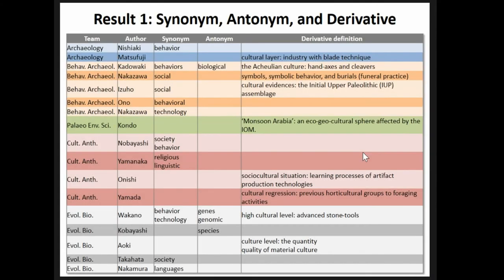In the English-language abstracts, counted by team, the evolutionary biology team — the most remote to cultural sciences — used the term 'culture' most frequently. We coded the text sentences using these criteria: synonym or paraphrase words, antonym or opposite words, derivative definitions, examples or subject, and indicators to analyze specific aspects of culture, as well as different expressions in Japanese-language abstracts. For synonyms and derivatives, anthropology teams tend to use culture as a synonym for behavior and social dynamics. Cultural anthropologists connect culture to behavior, society, and also cultural regulation, religious linguistics. Evolutionary biologists think of culture as a kind of quality — a high or low culture level — connected also to behavior and sometimes language.